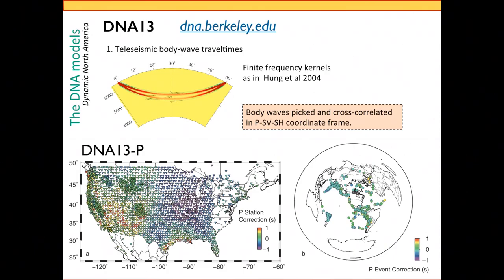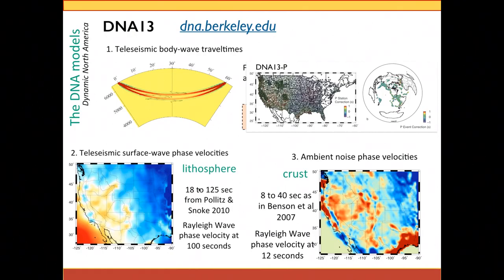I used the IRIS fetch data script to get all events with at least three stations at between 30 and 80 degrees recording — essentially the best coverage possible with about five years' worth of data. The SV component model, available at dna.berkeley.edu, also incorporates a joint inversion with teleseismic surface wave phase velocities to constrain the lithosphere, and ambient noise-derived phase velocities to constrain the crust, down to about 125 seconds period for the lithosphere.